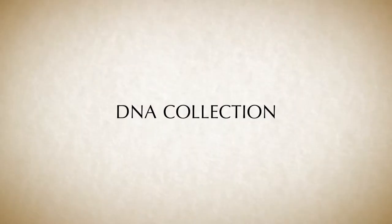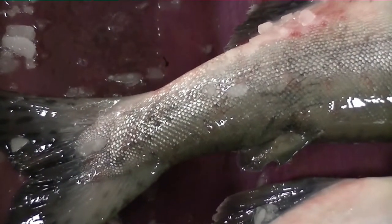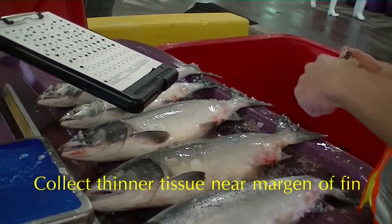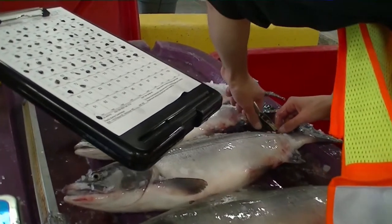The final sampling component is collection of a DNA tissue sample. DNA is collected using a hole punch to remove a small disk of tissue from the margin of the adipose fin. Thinner tissue is best because it preserves better and the sample does not need to fill the entire hole punch. If the adipose fin is missing, take the sample from the caudal fin instead.